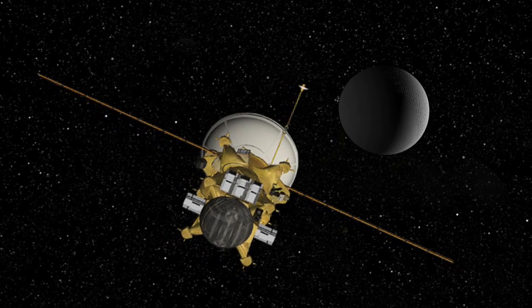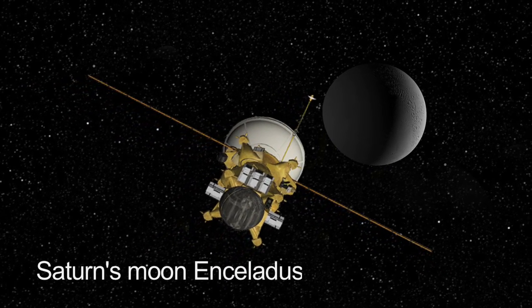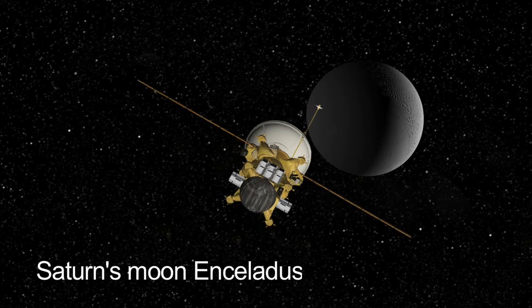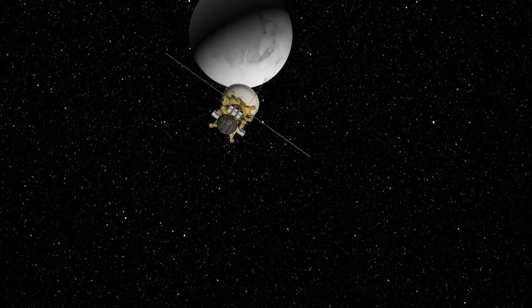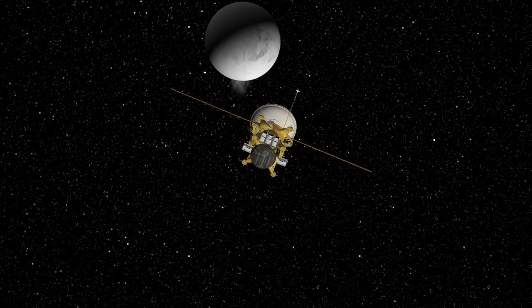The Titan Saturn System mission also will go to Enceladus, the tinier moon a thousand times smaller than Titan, which has volcanoes, geysers essentially, that are spewing material from the inside of this moon outward.